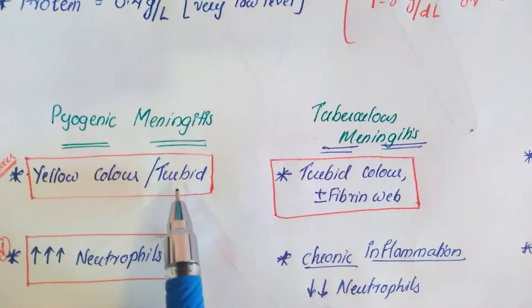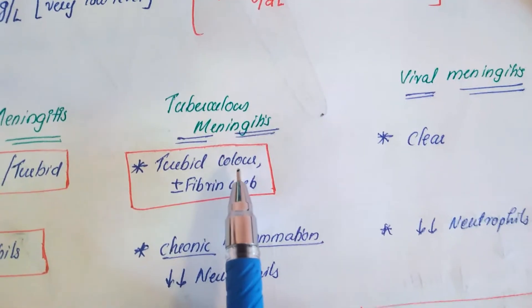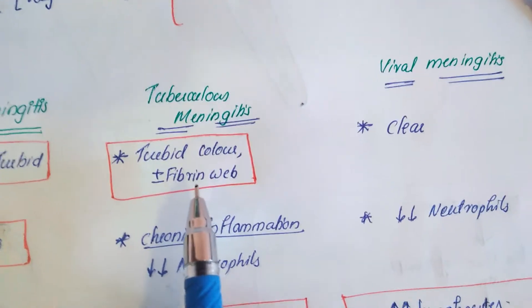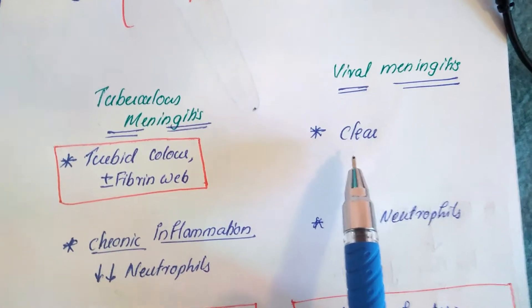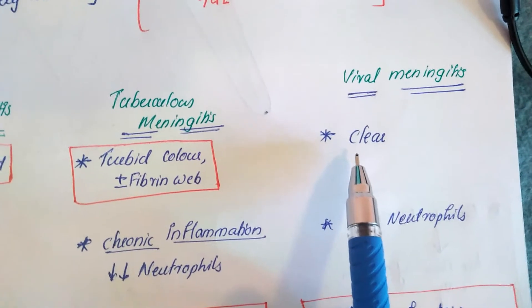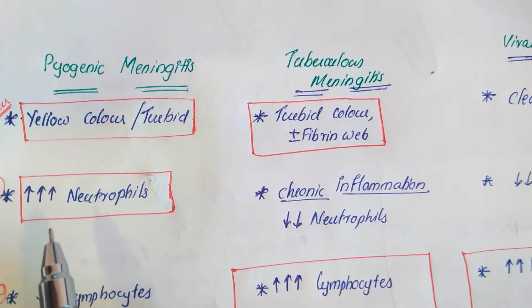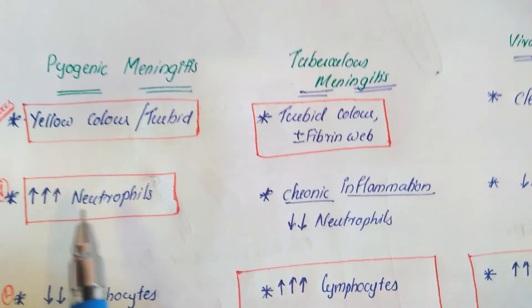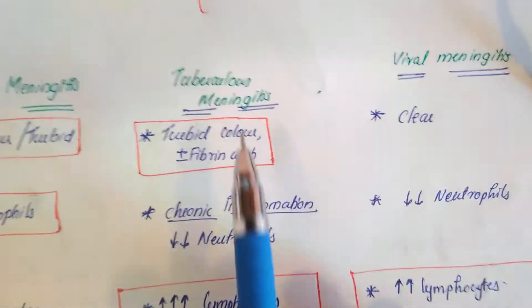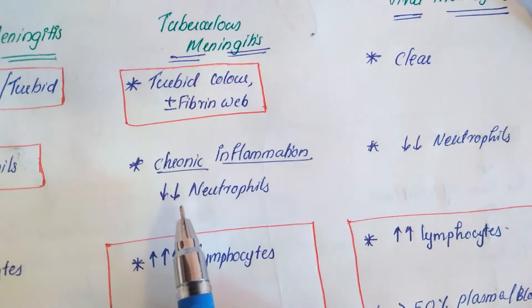Because pyogenic meningitis forms pus, the CSF is turbid. In tuberculosis meningitis, the color may be turbid and a fibrin web may be present. In viral meningitis, the liquid color is unchanged — it remains clear and transparent. Regarding cells: pyogenic meningitis causes acute inflammation, so the CSF has a very high level of neutrophils. Tuberculosis is a chronic inflammation, so the level of neutrophils is very low.